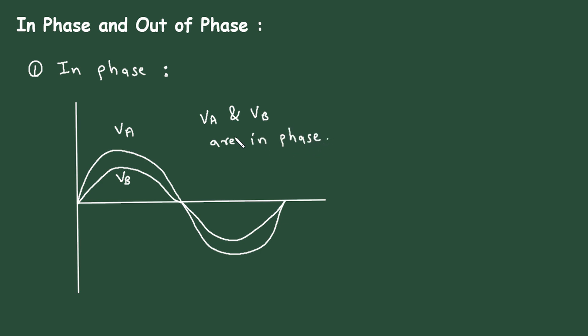Now why they are in-phase? Because here we can see VA is starting from this zero and VB is also starting from this zero, and this is called as zero crossover. So both VA and VB are meeting at the same zero crossover. Here also they are meeting at the same zero crossover point. That's why VA and VB are in-phase.